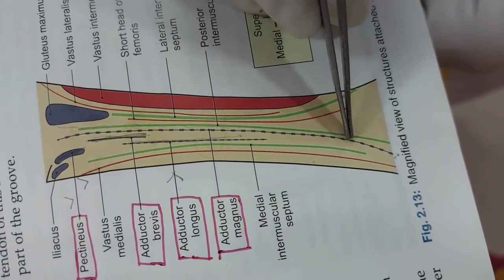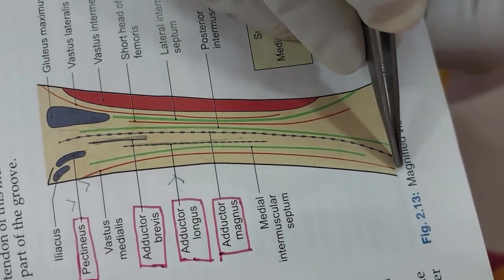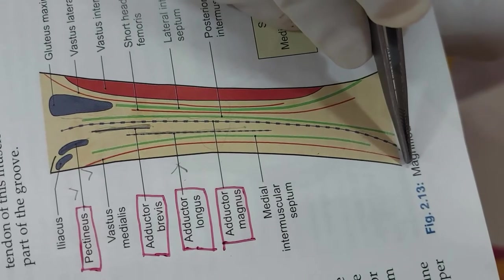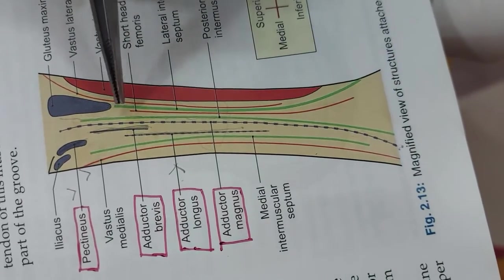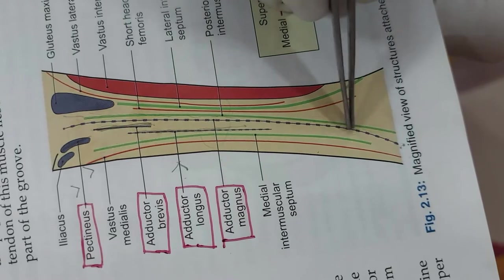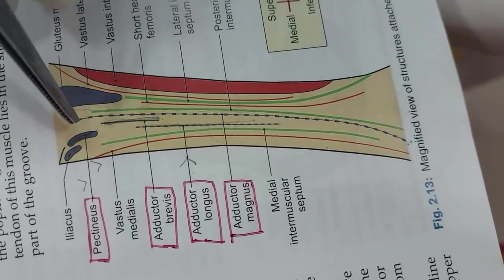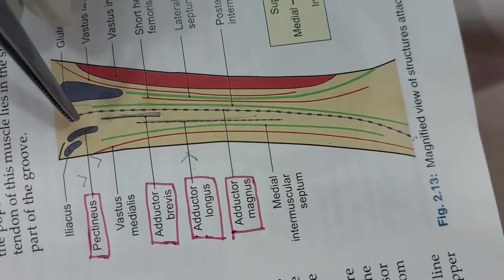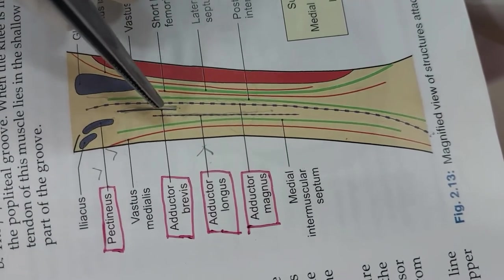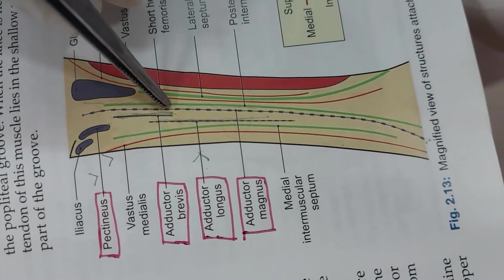The insertion of adductor magnus extends up to the medial supracondylar ridge and up to the adductor tubercle, just in the upper part of the medial condyle of the femur. This wide area is the insertion of adductor magnus. So these are the insertions of pectineus, adductor longus, adductor brevis, and adductor magnus.